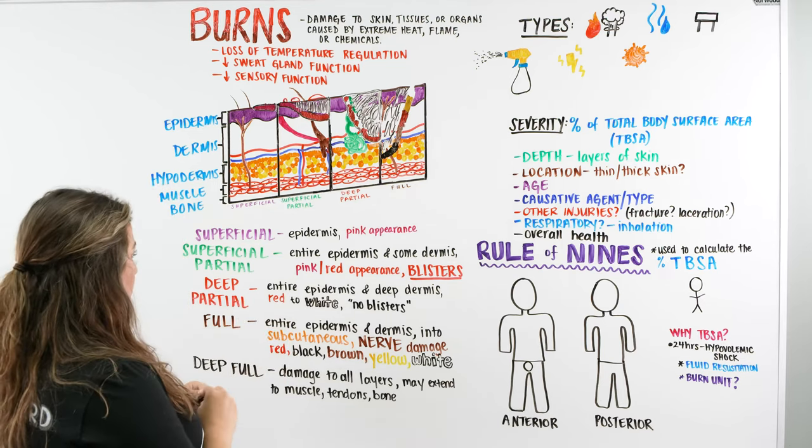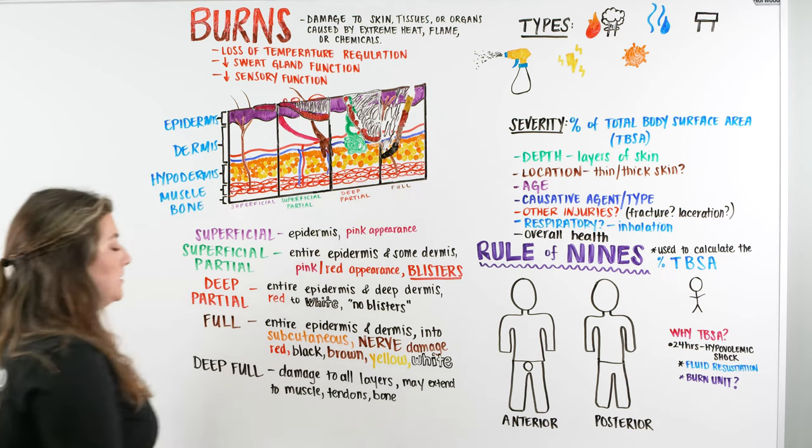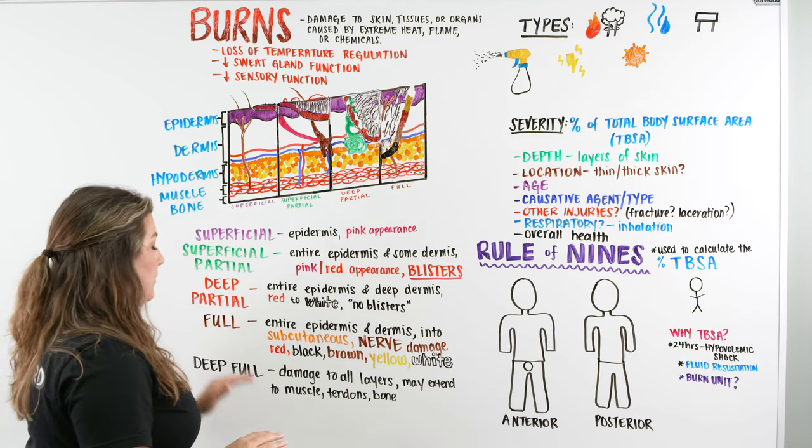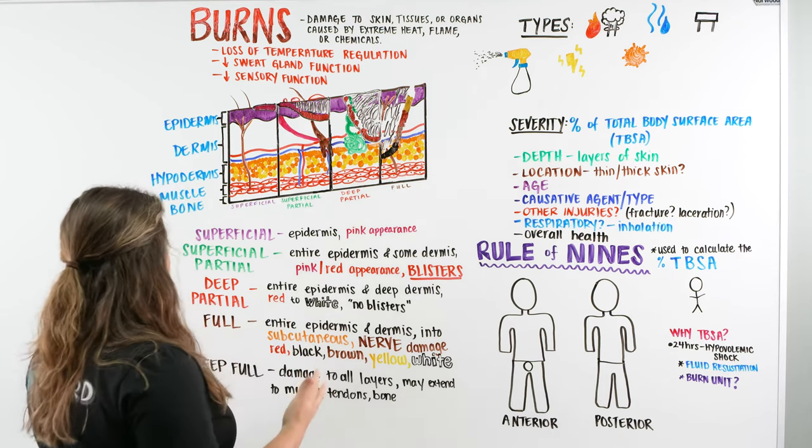And then we have one more that I didn't draw in here. That is our deep, full thickness. That means it's going to go through all the layers. It could extend to our muscle, our tendons, and our bone, which is the biggest and most severe.